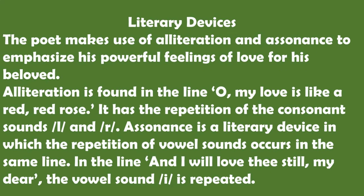The poet makes use of alliteration and assonance to emphasize his powerful feelings of love for his beloved. Alliteration is found in the line 'O my love is like a red red rose,' with the repetition of the consonant sounds 'L' and 'R.' Assonance is a literary device in which the repetition of vowel sounds occurs in the same line. In the line 'and I will love thee still, my dear,' the vowel sound 'E' is repeated.